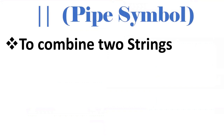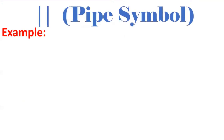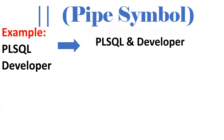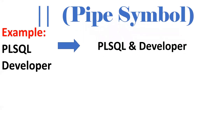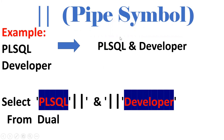The pipe symbol is used to concatenate two strings — to club two strings into a single string. The syntax is: string1 || string2. For example, 'PLSQL' is one string and 'developer' is another. If I want to display 'PLSQL developer', I use the pipe symbol: 'PLSQL' || ' ' || 'developer'. So the pipe symbol concatenates two strings.